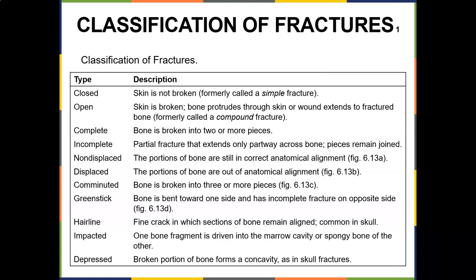Fracture classification: a closed fracture means skin is intact (formerly called simple); open means bone protrudes through the skin. A complete fracture breaks bone into two or more pieces; an incomplete fracture extends only partway across. Non-displaced means bone portions remain in correct anatomical alignment; displaced means they are out of alignment. A hairline fracture is a fine crack with sections remaining aligned — by definition it won't break the skin, so 'open displaced hairline fracture' is contradictory terminology.